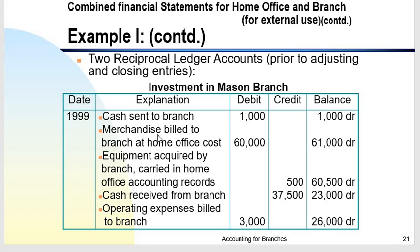Take note: the balance of the investment in branch account and the balance of the home office current account should be equal if there are no timing differences. If there are timing differences in recording between the home office and the branch, that is when you do a reconciliation. We also have a separate discussion for reconciliation.